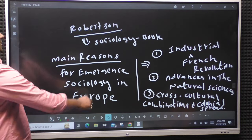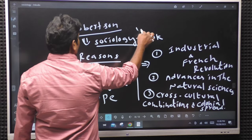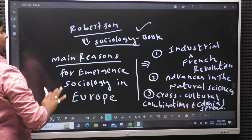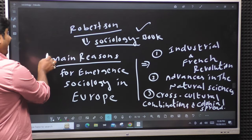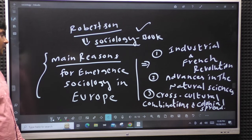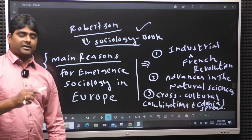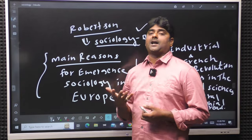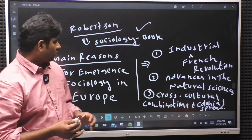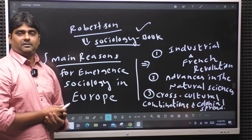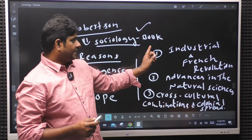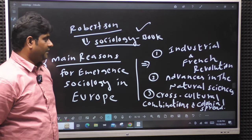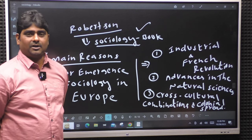Robertson wrote a socialization book. The main reasons for the emergence of sociology in Europe in the 19th century - in the 19th century in Europe, sociology was created for the first time. There were three reasons. Number one: Industrial Revolution and French Revolution. The UK Industrial Revolution started in 1757.